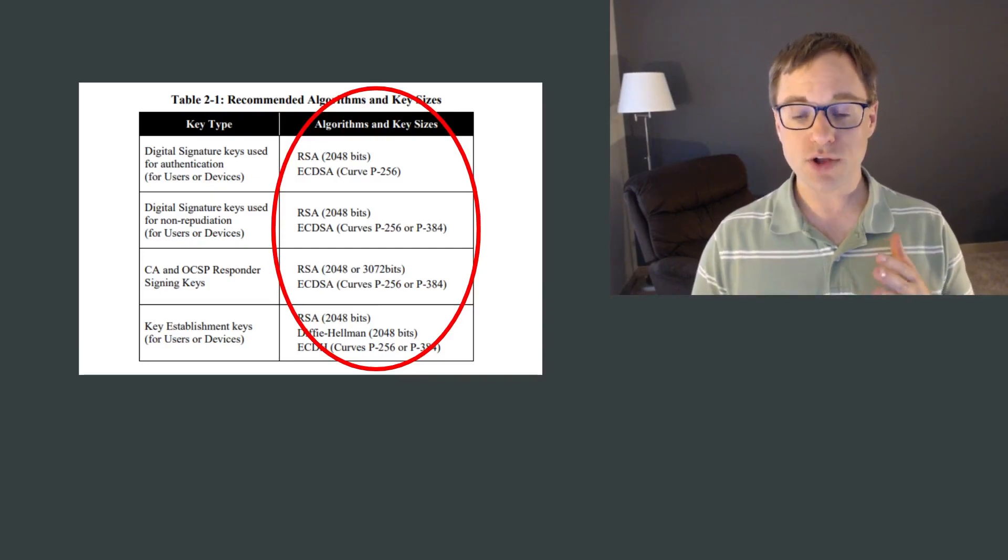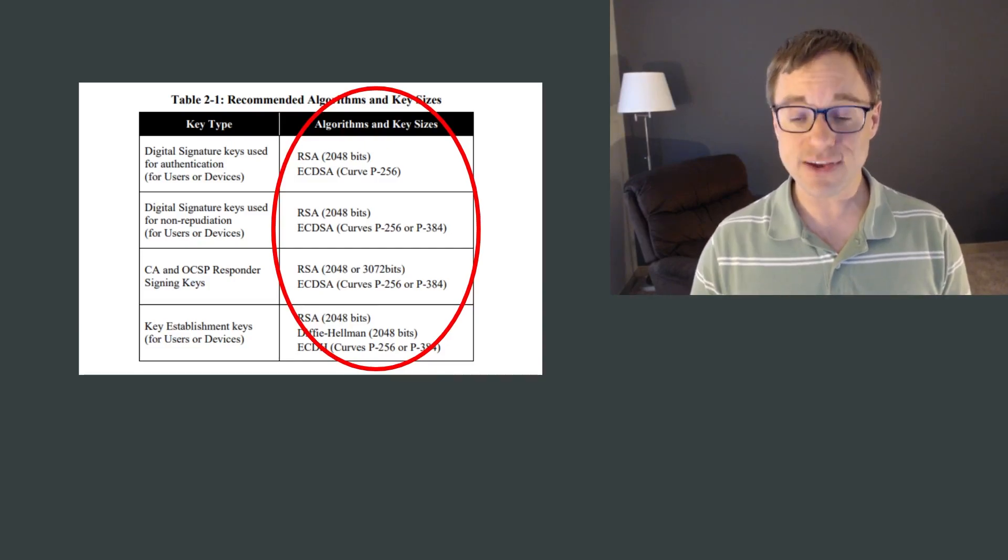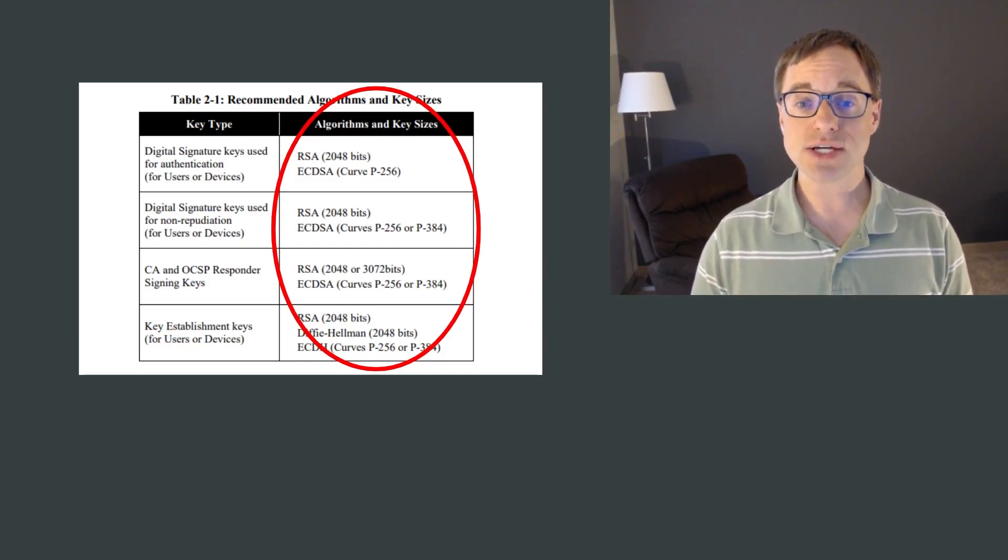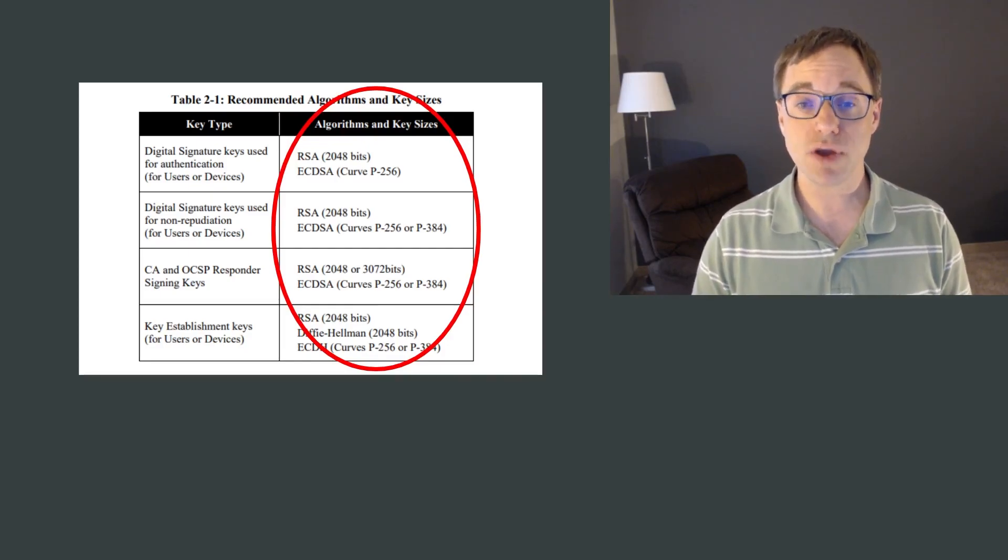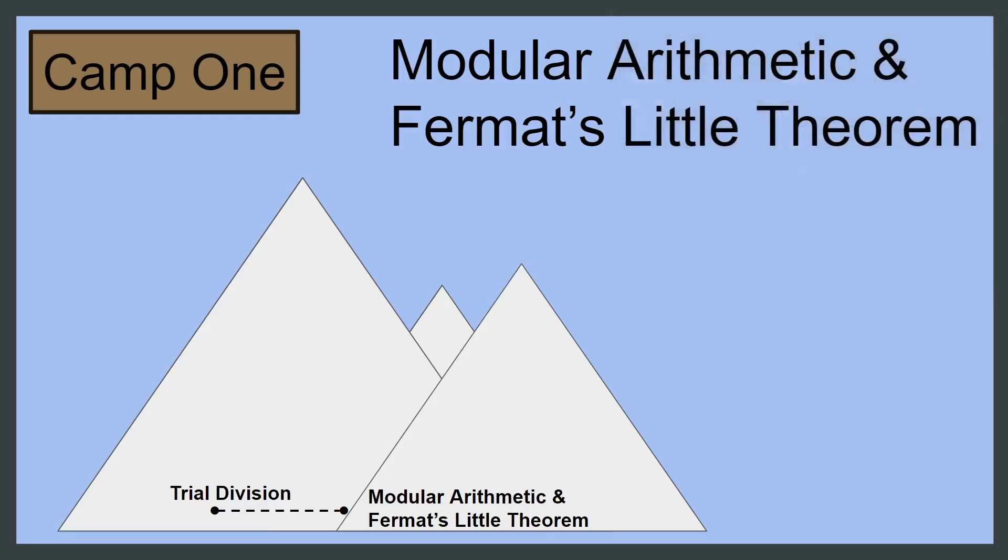So, while trial division certainly wins awards for its simplicity, if we want to be able to test seriously large primes, we're going to have to learn some more sophisticated methods. And that means learning a little bit of number theory. In particular, in the next video, we'll take a look at Modular Arithmetic and Fermat's Little Theorem. I do hope you'll join me.